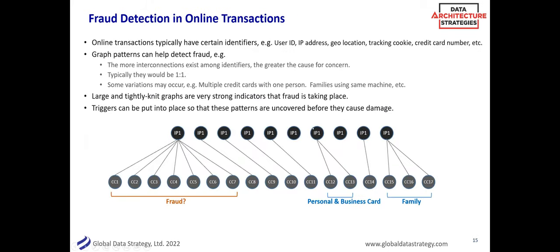Moving along — fraud detection. If you have online transactions, there are typically identifiers: a user ID, IP address, geolocation, credit card, etc. Graph patterns can help you detect fraud. One IP address that suddenly had seven credit card transactions all within a few minutes — seems strange. Is that a bot, someone committing fraud? It doesn't mean every IP with multiple transactions is suspicious — it could be three people in the same family shopping for Christmas, or me with personal and business credit cards. But when you see massive tightly-knit indicators, companies can put triggers in place to take action.